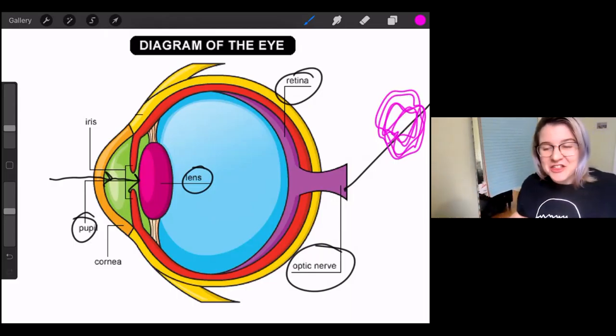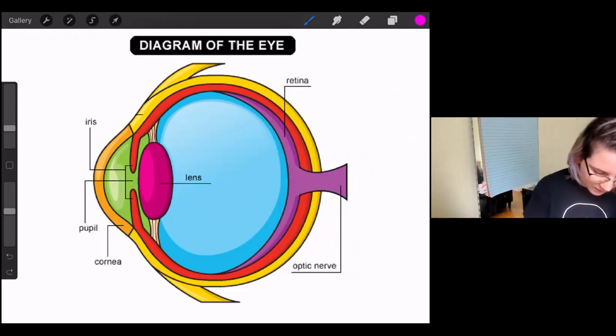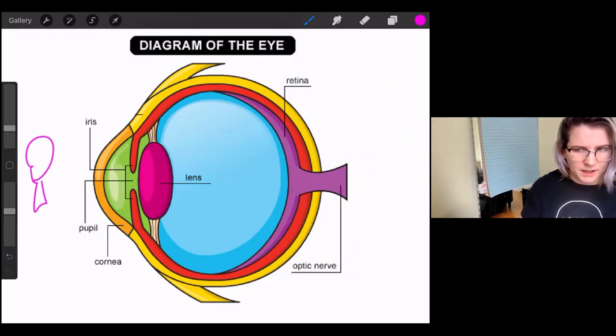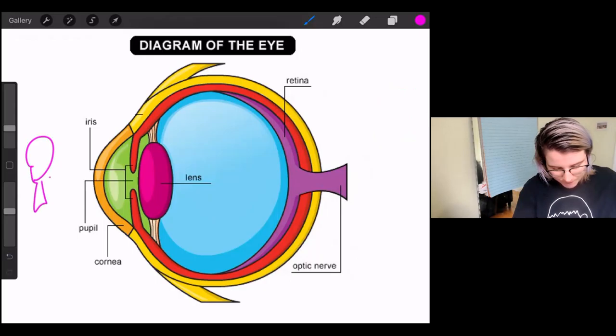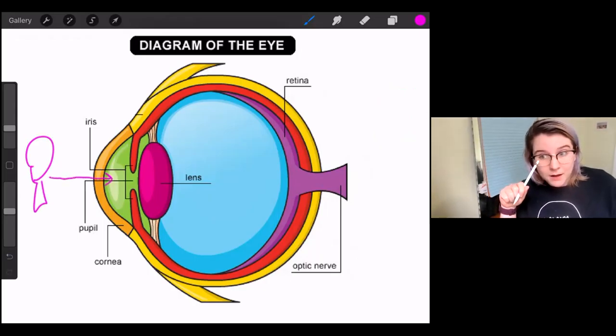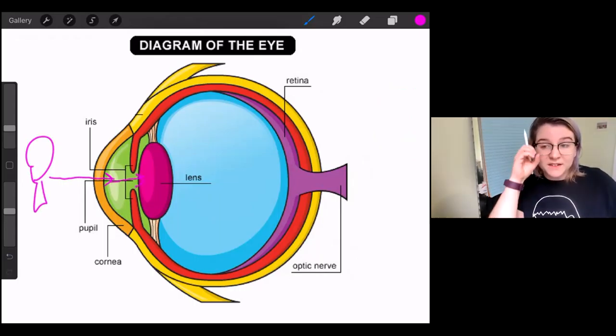So again, let's go really quick through the pathway that light takes through your eye. Okay. I'll keep it pink. All right. So we've got a little light bulb here. Right? That's what a light bulb looks like. Use your imagination. Okay. So we've got a light bulb. And the light first goes through your cornea, that clear lens. Then it goes through the pupil because the iris makes it the exact right size and the exact right amount of light.